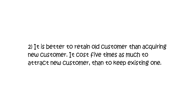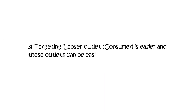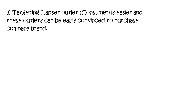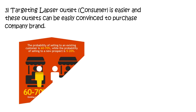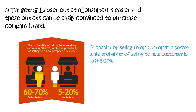Secondly, it is better to retain an old customer than to acquire a new one — it costs 5 times as much to attract a new customer than to keep an existing one. Thirdly, targeting Lapsed Outlets is easier and these outlets can be easily convinced to purchase company brands. The probability of selling to an existing outlet is 60 to 70%, while the probability of selling to a new customer is only 5 to 20%. Thus, focusing on Lapsed Outlets is better than finding new customers.